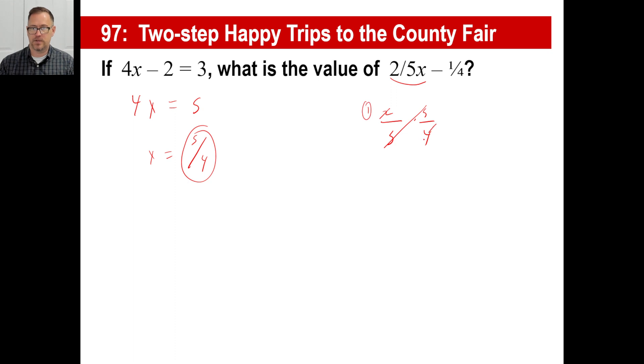Okay, so what's the value of 2 fifths x minus 1 fourth? Well, no big whoop. 2 fifths times x is 2 fifths times 5 over 4. That crosses out. There's a 1 up there with a 2 and then there's a 2 down there. So I've got a half minus 1 fourth is what they're asking for. Well, a half minus 1 fourth is 2 fourths minus 1 fourth, which is just 1 fourth. There you go. That's two-step happy trips to the county fair.